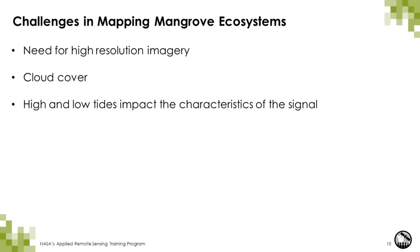Some of the challenges in mapping mangrove ecosystems include the need for high-resolution imagery, since these ecosystems tend to cover narrow bands along the coastline. Given that mangroves are found in tropical and subtropical coastal areas, these are regions more prone to cloud cover, making it difficult to find cloud-free optical imagery. Finally, the conditions in these ecosystems are dynamic — there are differences between high and low tide, for example, which can impact the characteristics of the satellite signal, especially when using radar.